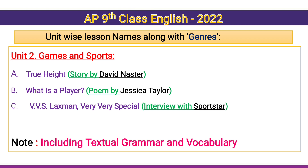Unit 2: Games and Sports. Reading A — 'A True Height,' a story written by David Naster. Reading B — 'What is the Player,' a poem written by Jessica Taylor. Reading C — 'VVS Laxman: Very Very Special,' an interview with the sports star. Including textual grammar and vocabulary.